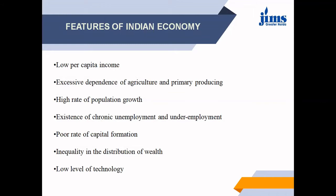Then, excessive dependence on agriculture and primary producing. Everyone knows that the Indian economy has excessive dependence on agriculture. It is characterized by too much dependence on agriculture and thus it is primary producing. Out of the total working population of our country, a very high proportion is engaged in agriculture and allied activities, which contributed a large share to national income. In 2004, nearly 58% of the total working population was engaged in agriculture.